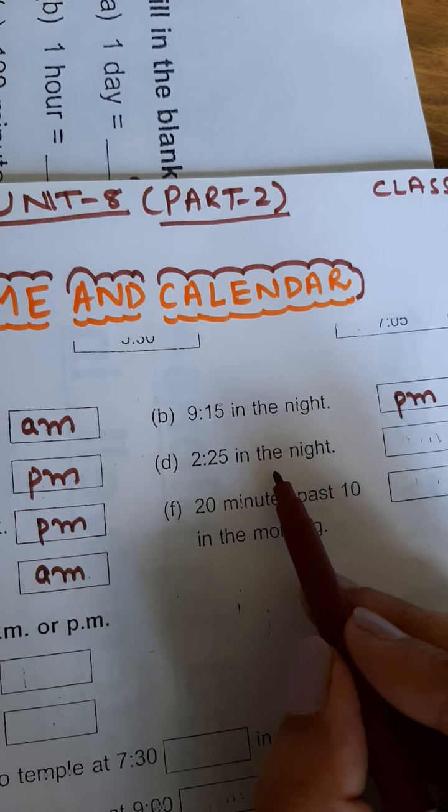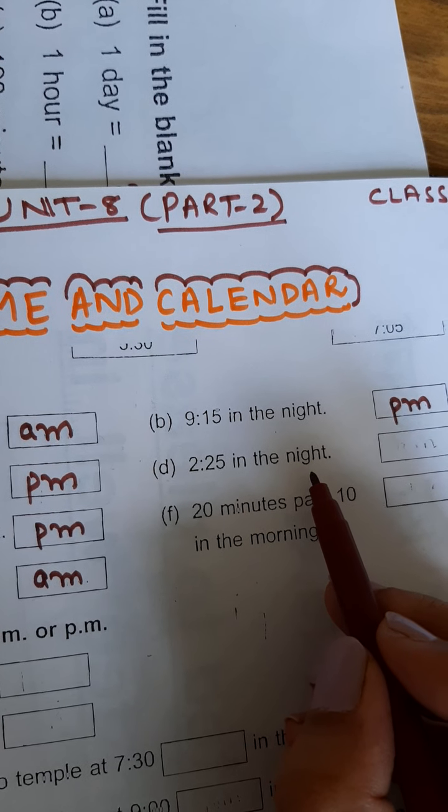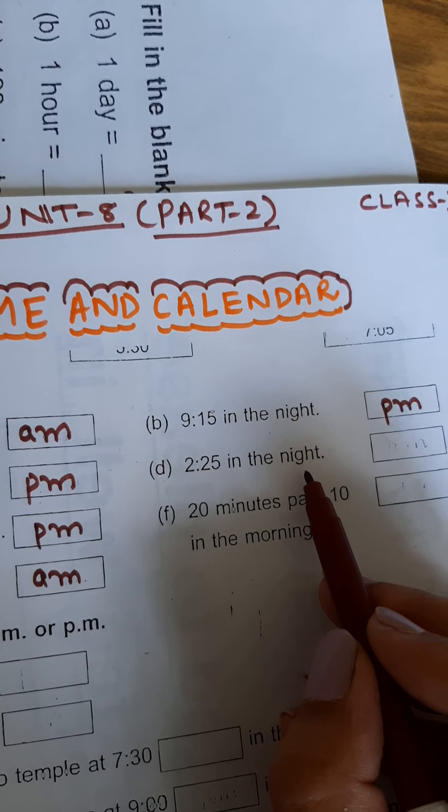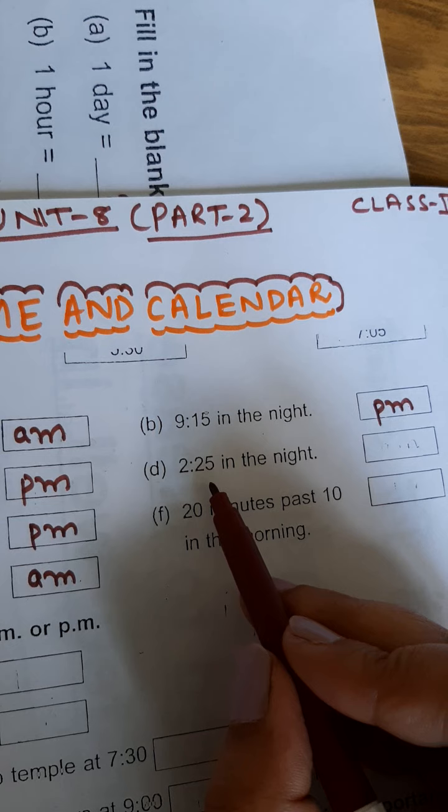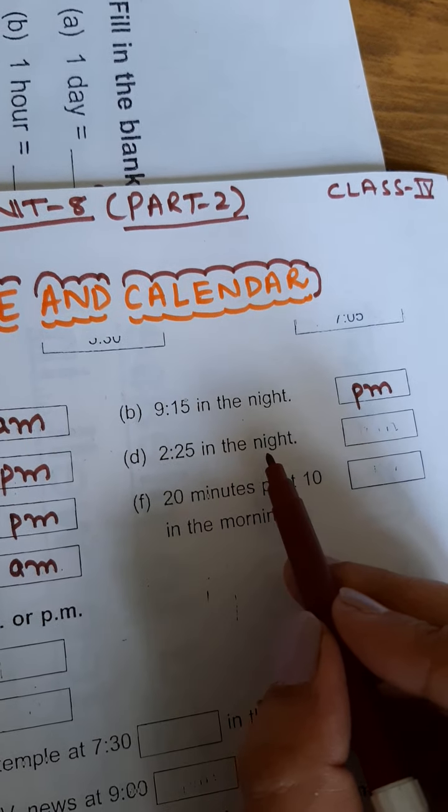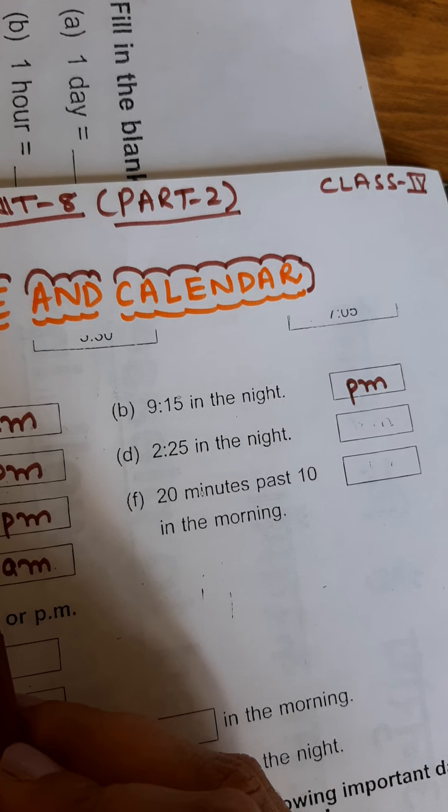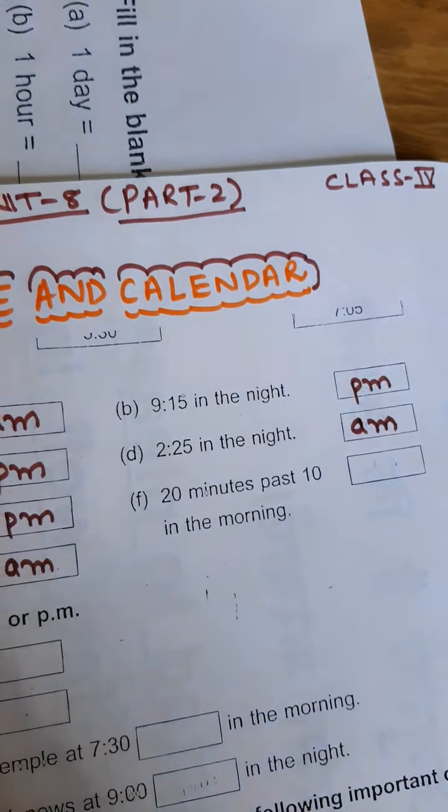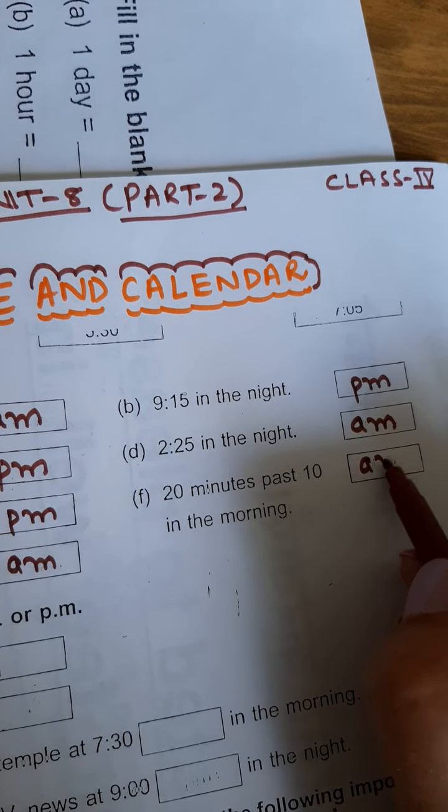Because this is 12:25 in the night, we usually write PM for the time for night and AM for morning, but in this case, 12:25 in the night means the time is between 12 midnight and 12 noon. That means here we have to write AM, not PM. 20 minutes past 10 in the morning - so we will write AM here.